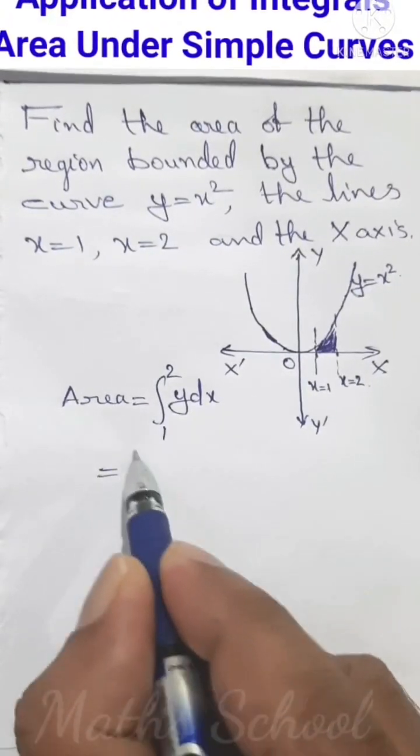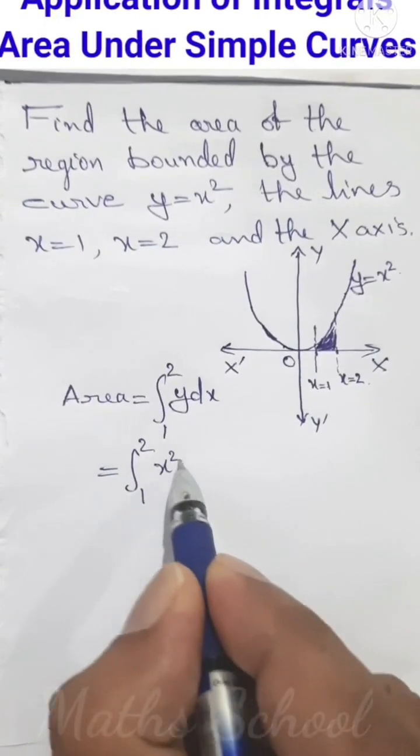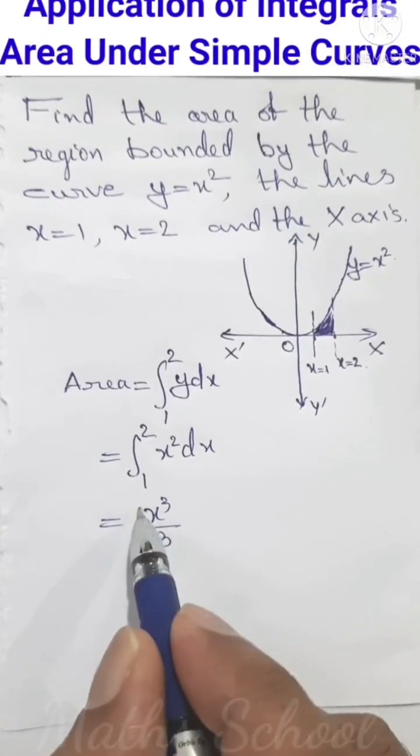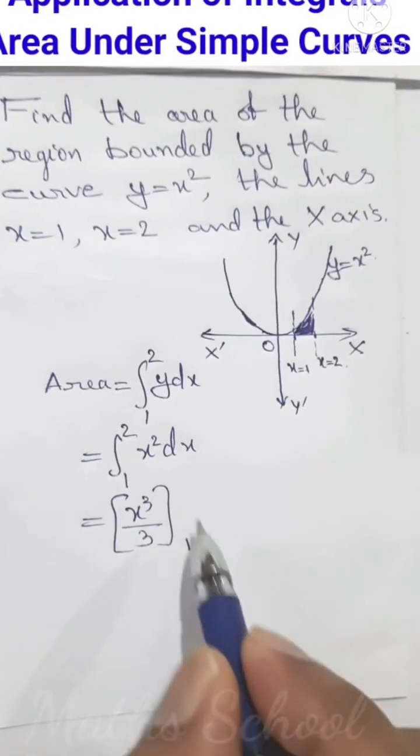That's equal to integral from 1 to 2 of x² dx, equal to x³/3. The integral of x² is x³/3 with limits 1 to 2.